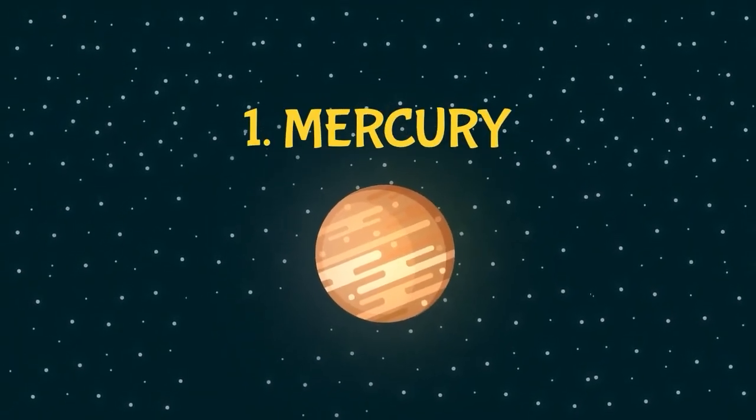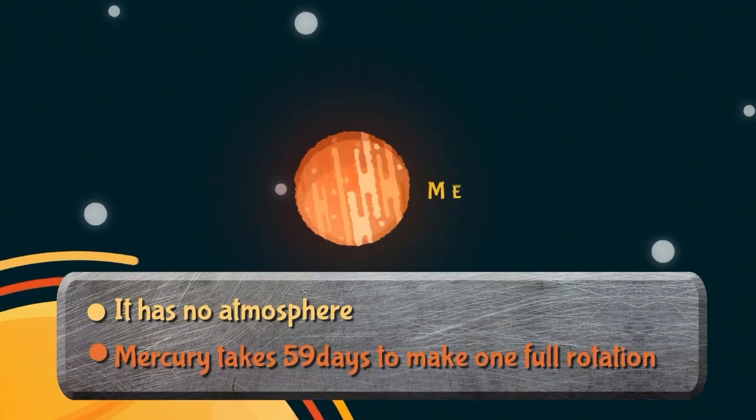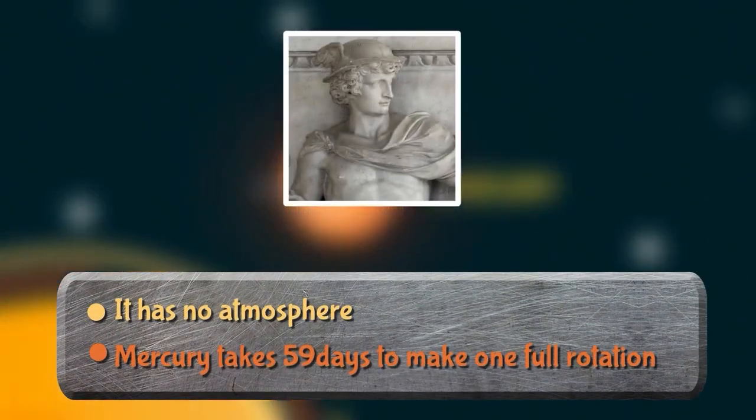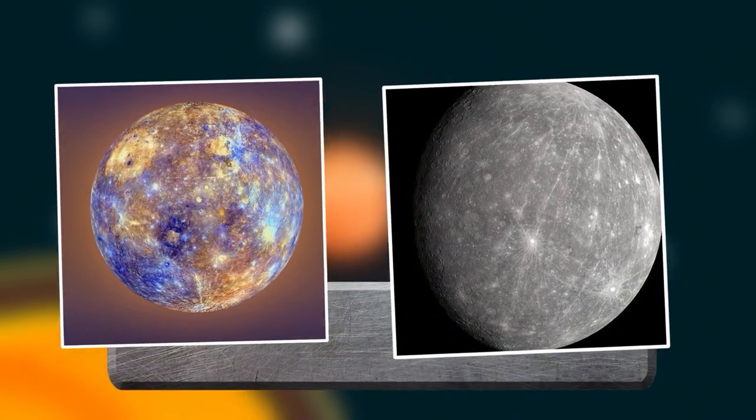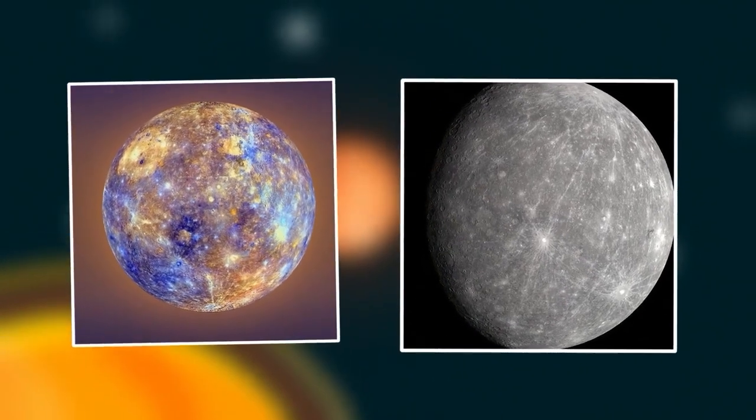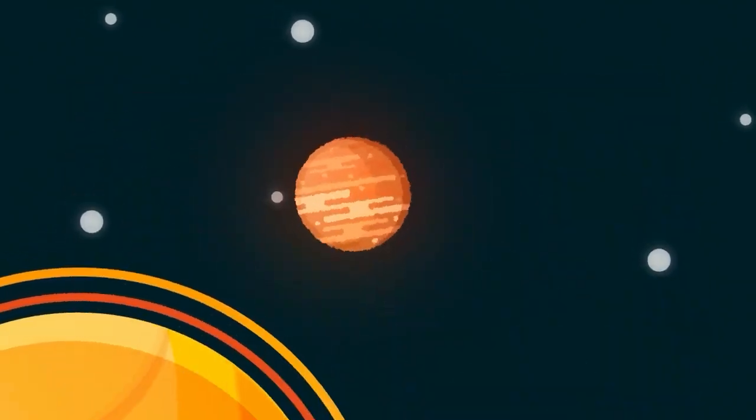Our cosmic quest begins with the closest planet to the sun, a fiery orb of scorching temperatures and swirling storms. Mercury! Named after the Roman messenger god, this little planet zooms around the sun faster than any other. It's a true speedster in the solar system.